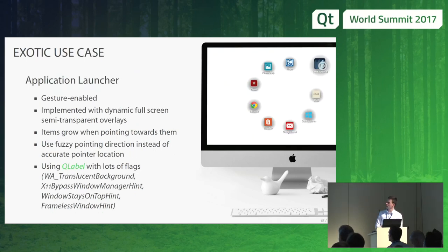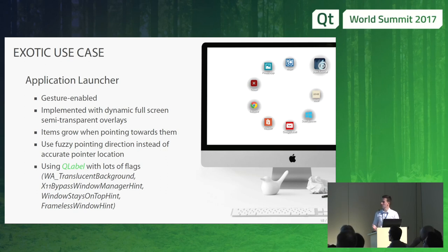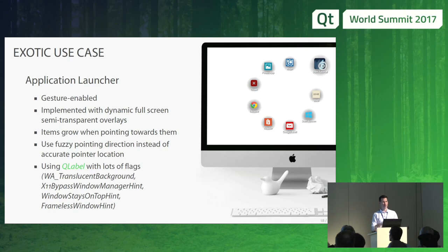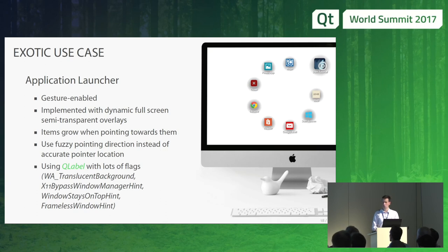As a last thing — an exotic use case we developed a few years ago. We had to develop a gesture-enabled application launcher where you pointed towards the screen and dragged in a direction to open applications. Here we used a very simple QLabel, made it transparent. The biggest issue was getting all the window manager parameters right to make it transparent, so you could click through it, overlay it on top of all other applications, and ensure it didn't interfere with the existing background. This is the most exotic use case we've had for Qt — but at the end it was an application launcher connected to our sensors.